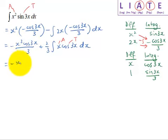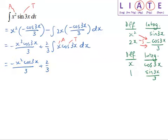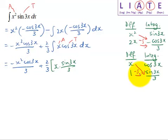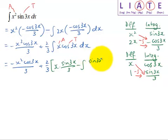Let me bring down the first term. To integrate by parts, take this times this: I have x times sine 3x over 3, and then minus the integration of this times this — so minus the integration of 1 times sine 3x over 3, which is just sine 3x over 3.